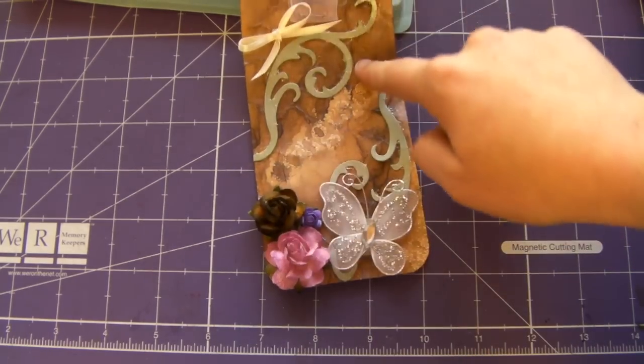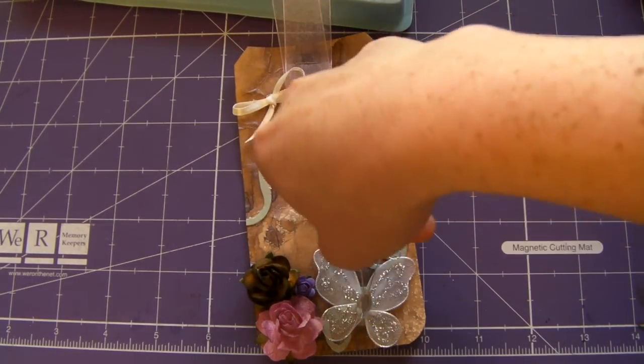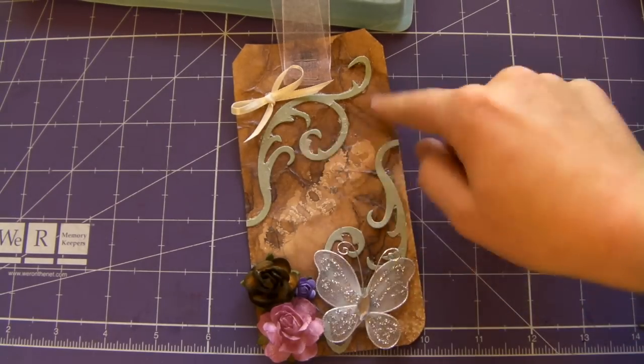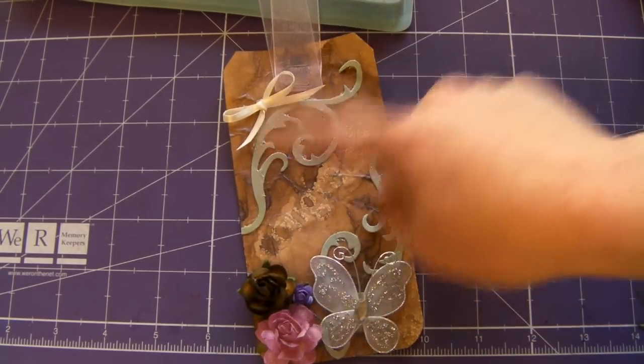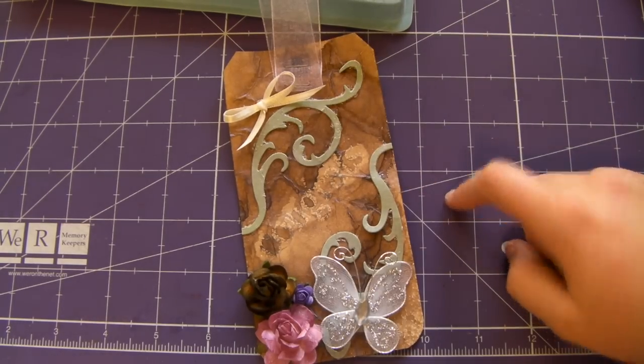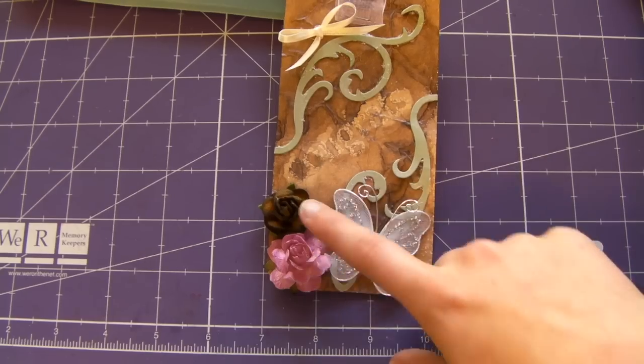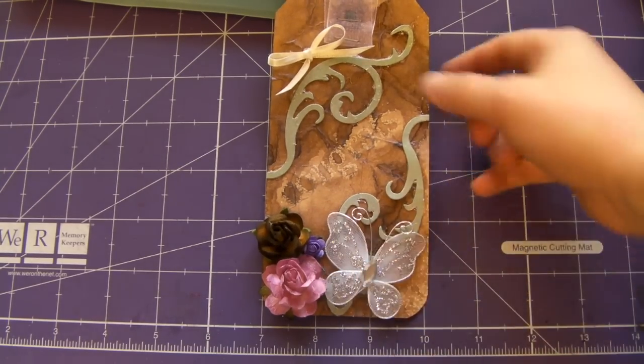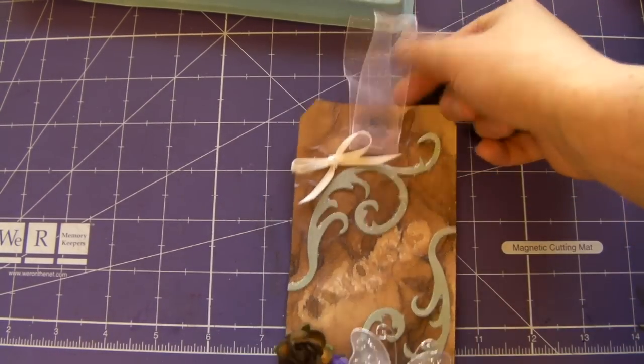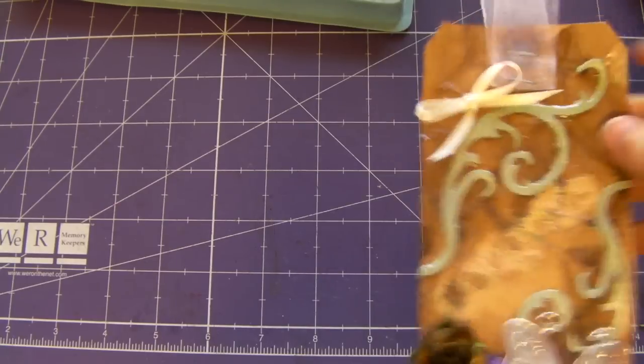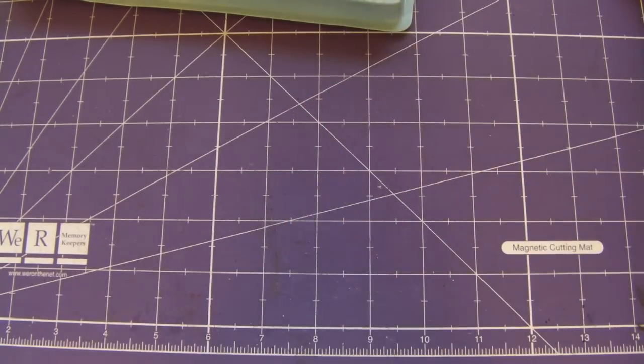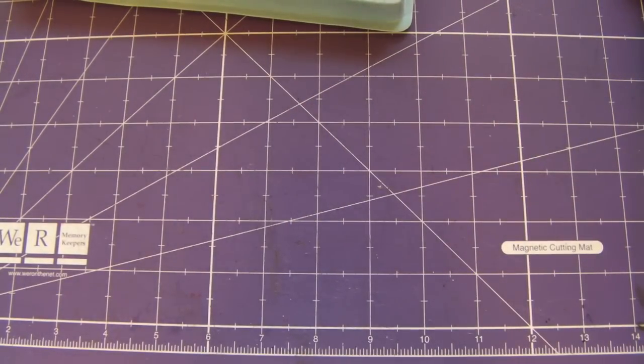Then I used some florets that I got from Carla. These are the Tim Holtz florets. Thank you, Carla. And I painted it with iridescent medium just over the color that she cut it out in. So it's a blue but it has like a little shiny effect to it. Did the same things with the flowers and the butterfly. Added a bow and then stapled some more sheer ribbon.